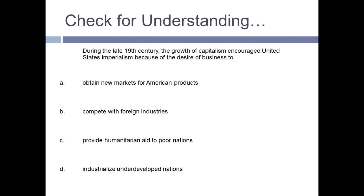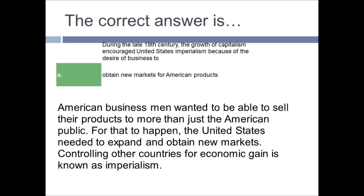Imperialism is the concept of a country controlling other countries or lands for its own gain. So looking at the check for understanding again — during the late 19th century, the growth of capitalism encouraged United States imperialism because of the desire of business to: A) obtain new markets for American products, B) compete with foreign industries, C) provide humanitarian aid to poor nations, or D) industrialize underdeveloped nations. The correct answer is A — obtain new markets for American products. American businessmen wanted to sell their products beyond just the American public, so the US needed to expand and obtain new markets. Controlling other countries for economic gain is imperialism.